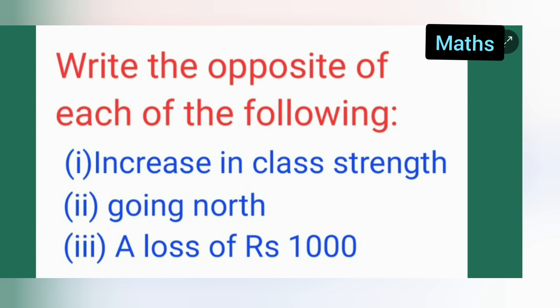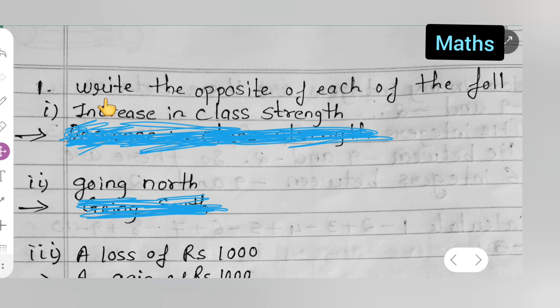Third is a loss of rupees one thousand. Okay, so let me turn the page. So the first thing is you'll have to write the opposite of each of the following. First is increase in class strength, which is nothing but...